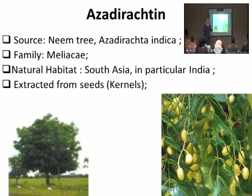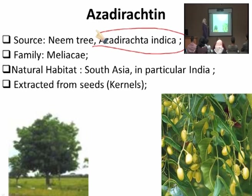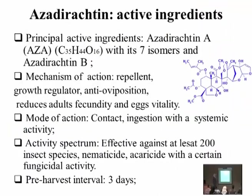The first plant we'll discuss in detail today is azadirachtin — a compound extracted from the neem tree (Azadirachta indica, family Meliaceae). The natural habitat is South Asia, primarily India. The extract comes from the seed, kernel, root, or plant. The chemical structure has been identified so that if a synthetic version is needed, they have the formula.